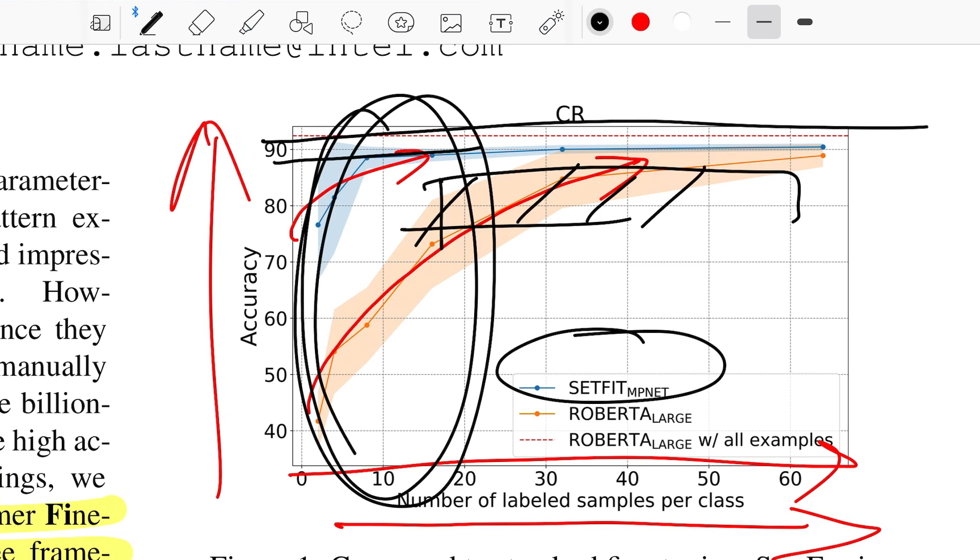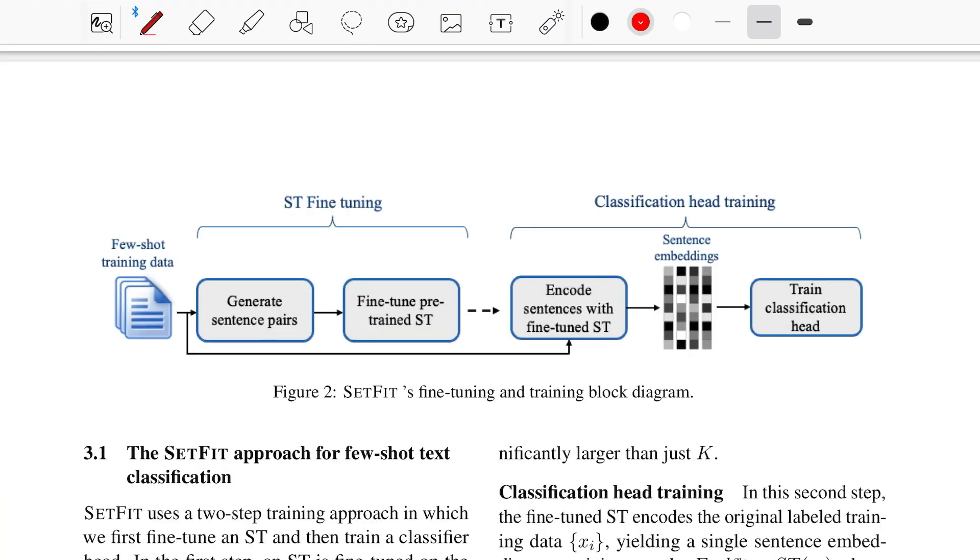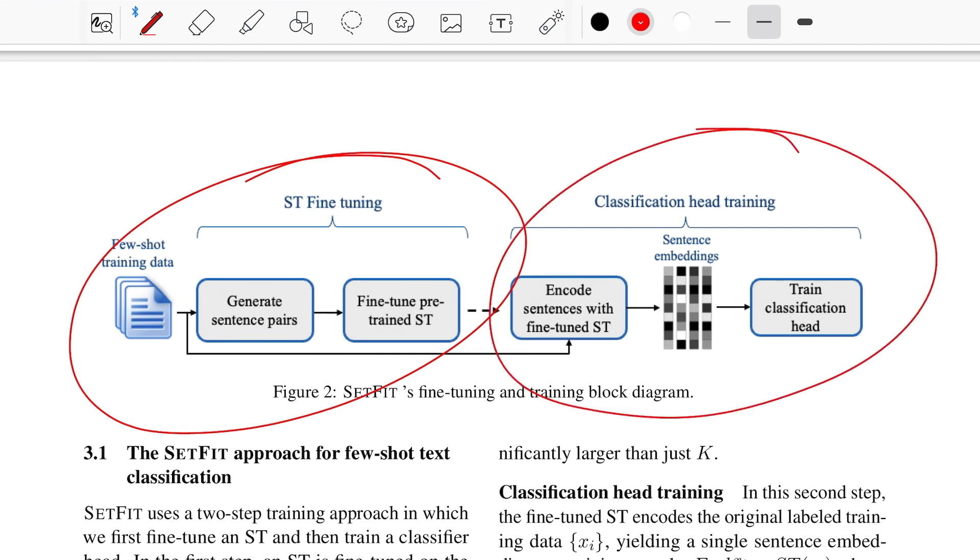With that said, let's move forward and see what exactly it does. This is how the entire two-step process looks like. This is step one, which is the fine-tuning phase, and then you have the classification head training, which is step two. You start off with some few-shot training data.